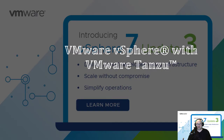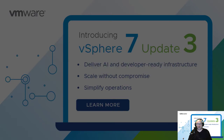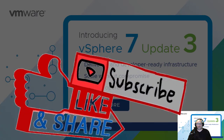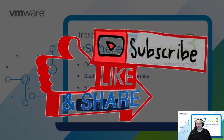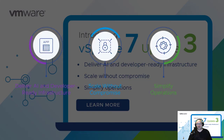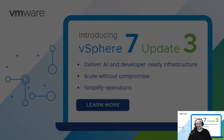We cannot forget about Tanzu, which is a big thing now. Last April with Update 2a, VMware announced Virtual Machine Services to help customers deliver AI and developer-ready infrastructure. With Update 3, developers can use Kubernetes commands to provision virtual machines on hosts with vGPU, allowing developers and teams to build and run AI apps on GPU-enabled hardware using a self-service model. Additionally, VMware — acting on customer feedback — has simplified the setup of VMware vSphere with VMware Tanzu, especially on the networking side. You can now get a testbed up and running with a fraction of the previous effort.